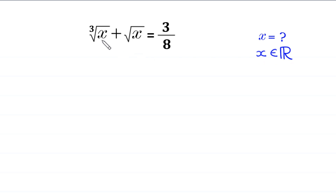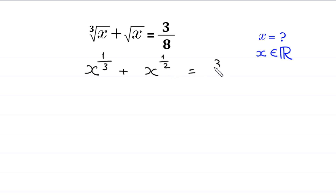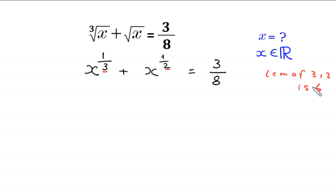This cube root of x can be written as x to the power 1 over 3, and this square root of x can be written as x to the power 1 over 2, is equal to 3 over 8. Now, the LCM of 3 and 2 is 6. So we suppose that x is equal to y to the power 6, and we substitute y to the power 6 in place of every x.